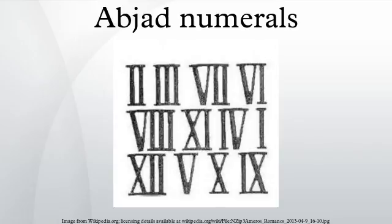The word 'abjad' itself derives from the first four letters in the Phoenician, Aramaic, Arabic, and Hebrew alphabets and other scripts for Semitic languages. These older alphabets contained only twenty-two letters, stopping at taw, numerically equivalent to four hundred.